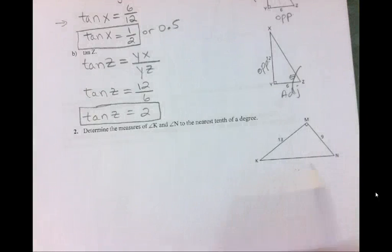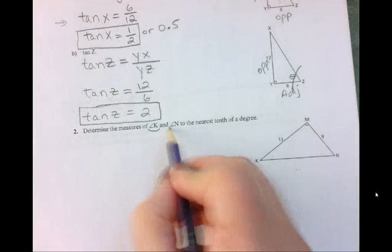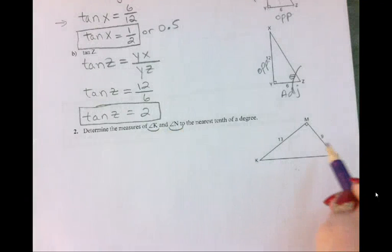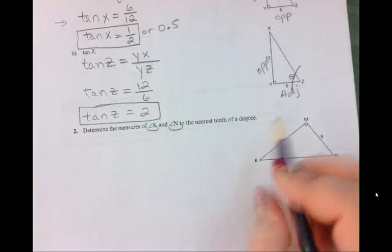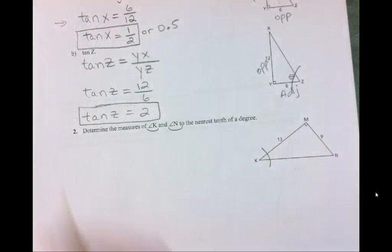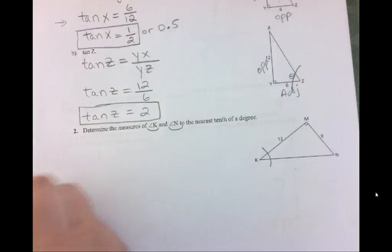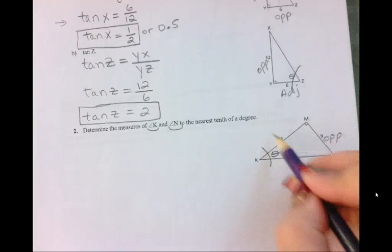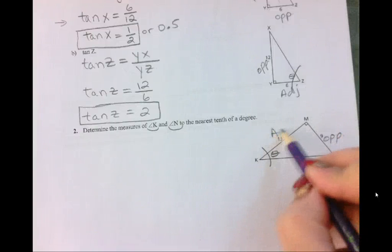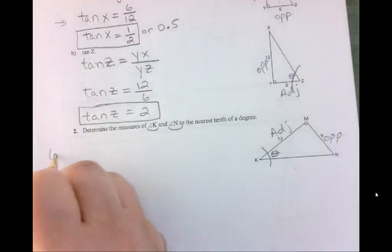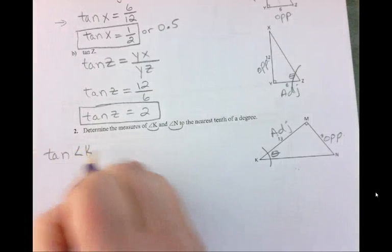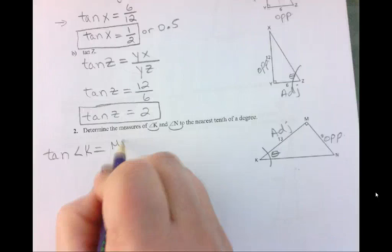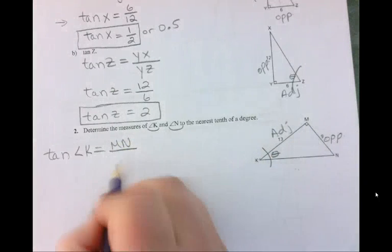Now this here, it says determine the measures of angle k and angle n. So first, we are going to look at angle k. So let's look at angle k and determine what it is. So we're going to call this theta. And what is this side going to be? Opposite. And what is this side going to be? Adjacent.